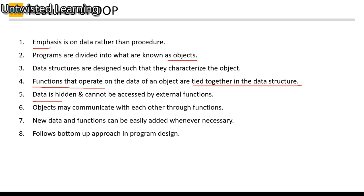Data is hidden and cannot be accessed by external functions. Objects may communicate with each other through functions only — functions for getting information, processing information, and displaying information. New data and functions can be easily added wherever necessary, and OOP follows a bottom-up approach in program design.